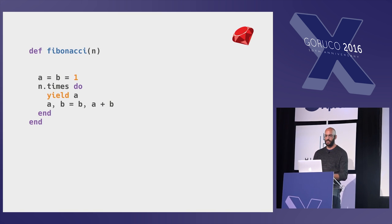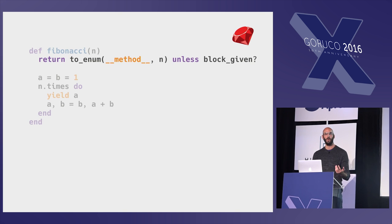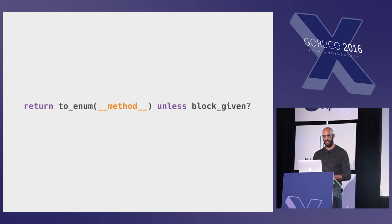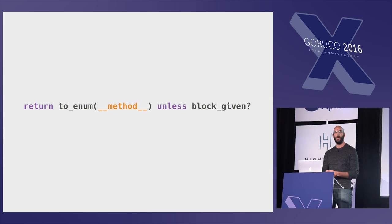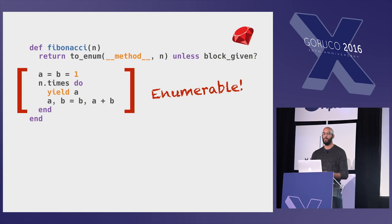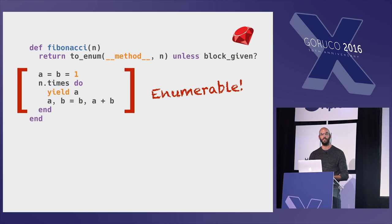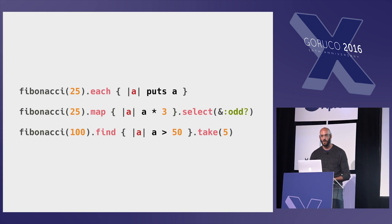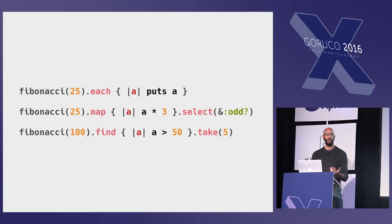We're going to add a guard clause that returns an enumerator when this method is called without a block. Drink this in for a second — this looks kind of ugly, doesn't it? We're converting an object to an enumerator, passing in this magic method name, using a conditional. It's a little difficult to wrap our heads around. The big win, though, is now we've converted this to an enumerator that can lazily generate the sequence as an enumerable. In other words, we can use map, find, select, and our favorite enumerable methods on this Fibonacci enumerator. It's kind of cool.